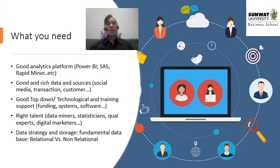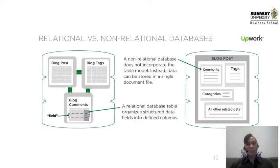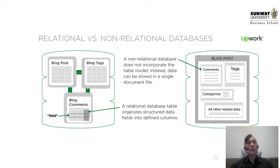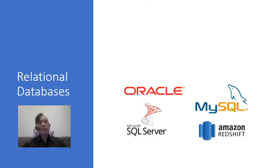You definitely need a good fundamental data storage strategy. This is where the difference between a relational database and a non-relational database becomes important. A relational database is basically a database of tables that organizes data structures into fields and defined columns, whereas a non-relational database does not incorporate this table model — instead the data is stored in a single document file using tags and composites of information grouped together. Some of the famous relational databases are Oracle, MySQL, Amazon, and the SQL Server.